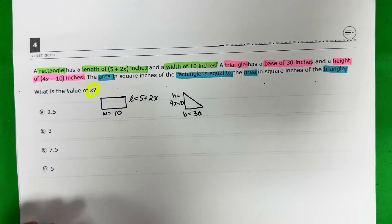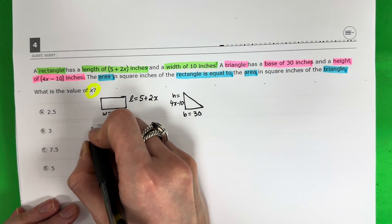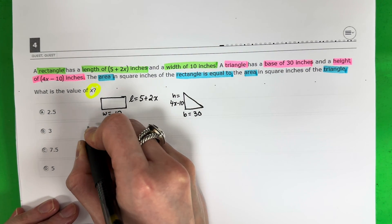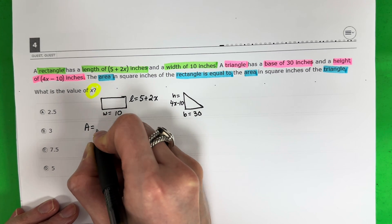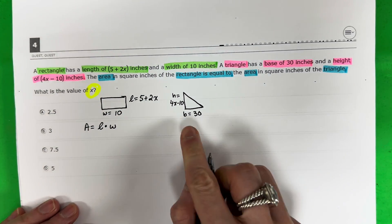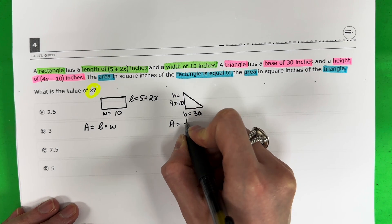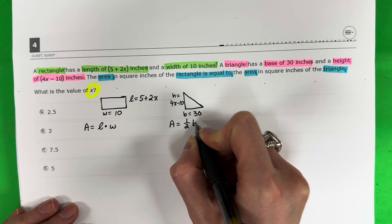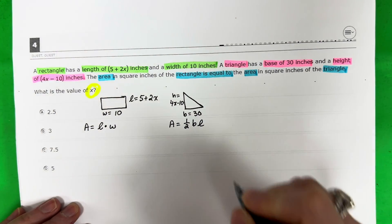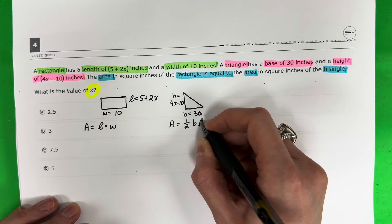All right, so we're talking about area. Let's go ahead and write down the formulas for area of a rectangle. The formula for the area of a rectangle is area equals length times width. And the formula for the area of a triangle is area equals 1 half base times height.